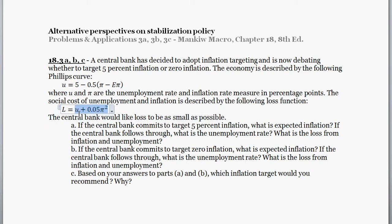This is an arbitrary parameterization. In general, the higher the unemployment, the worse off a central bank is. A central bank generally wants unemployment to be pretty low, and also wants inflation to be pretty low. So if they're trying to minimize this loss function, they want unemployment and inflation to be as low as possible.